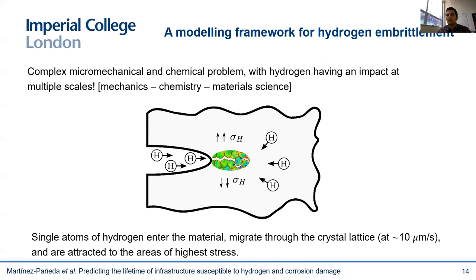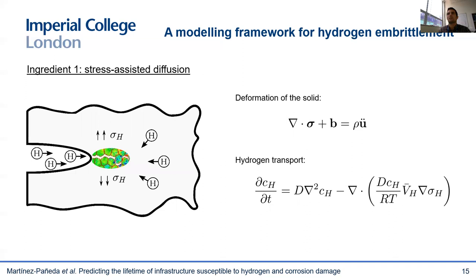Then, in the fracture process zone, hydrogen interacts with the material at multiple scale levels and in various ways — changing the dislocation mobility, reducing the atomic bonding strength, and so on. So capturing everything is a daunting task, but at the very least, a predictive model has to capture the diffusion of hydrogen and the interplay between mechanics and chemistry. That is the first ingredient: a coupled stress-diffusion problem. We need to solve an equation for the strain and stress state — the standard balance of linear momentum — and an equation for the transport of hydrogen within the crystal lattice, which is essentially an extended version of Fick's law, with coupling through the hydrostatic stress.